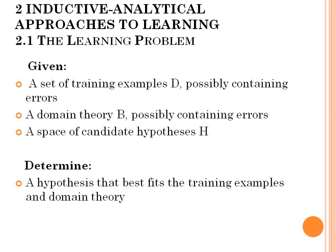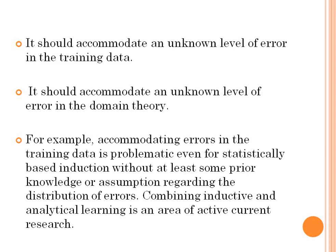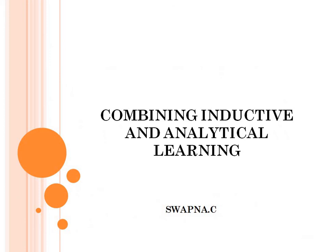Inductive-analytical approaches to learning have already been covered in a separate previous video. To summarize today's topic — combining inductive and analytical learning: we studied what inductive and analytical learning are, what each requires, their main advantages and disadvantages, and why we combine them. When we have imperfect data and imperfect domain theory, we use the advantages of both and cover the disadvantages of purely inductive and purely analytical learning. That is why the combining inductive and analytical learning approach is used. Thank you, we'll meet in the next video.